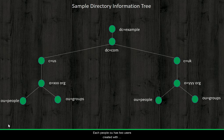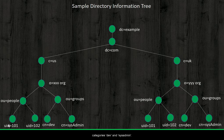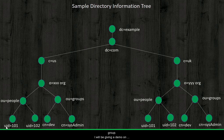One OU is for people and the other for group. Each people OU has two users created with POSIX account object class, and each group OU has two categories: dev and system admin. UID of the people can be added to the dev or sysadmin group, by which we are assigning each user to a group. I will be giving a demo on this in coming lectures, and you will understand this even better at that time.